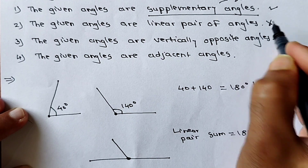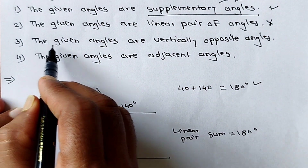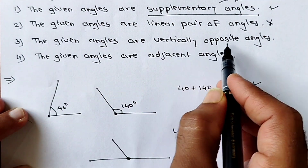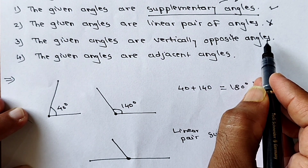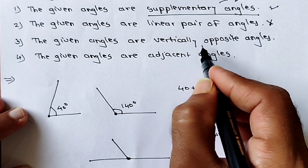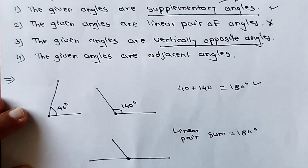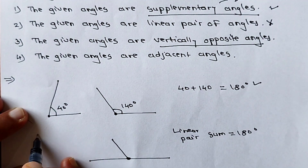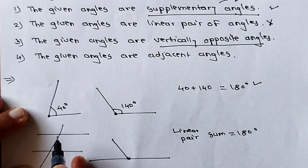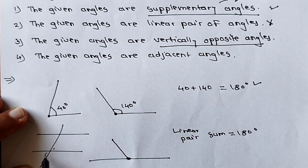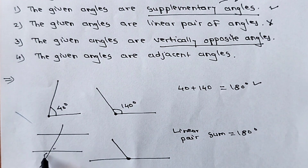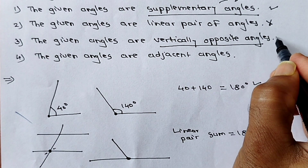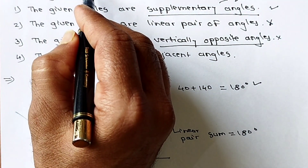Third statement: the given angles are vertically opposite. For vertically opposite angles, two lines must intersect and the angles must share the same vertex. This condition is also not satisfied here because the angles have different vertices.